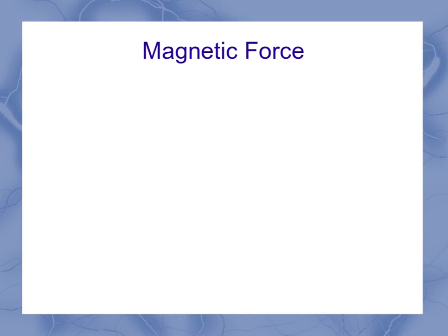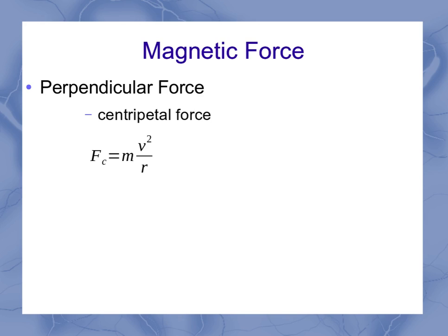Now, coming back to our magnetic force equation, I've got a perpendicular force. Well, from what we've studied in physics one, when I have a perpendicular force, that means I've got a centripetal force. It's causing circular motion. Our equation for centripetal force from last semester was MV squared over R, and our equation for the magnetic force from this semester is QVB sine theta.